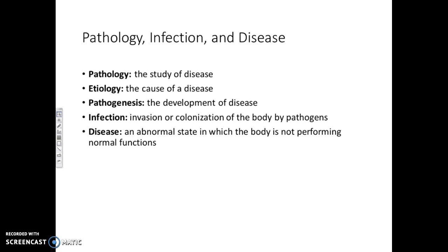First we have to talk about pathology, infection, and disease. Pathology is the study of the disease itself — its natural history. How long before you are exposed do you get symptoms? What is the percentage of people who actually get symptoms? What do the symptoms and signs look like? Symptoms are general things that you can't really measure, like pain, fatigue, aches. Whereas signs are things like fever or rash — things that can be objectively measured. Each disease has its own thumbprint, where the pathology is very unique to that specific illness.